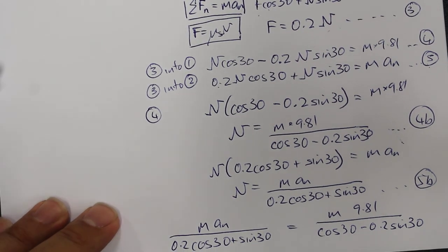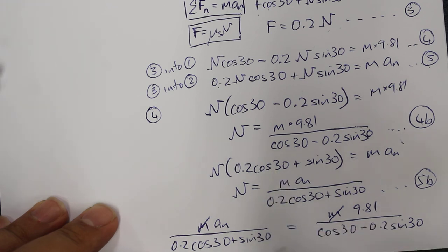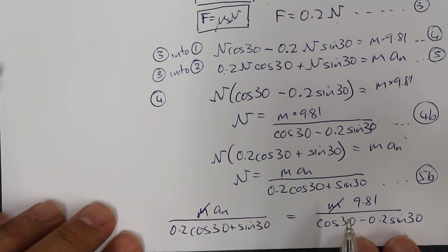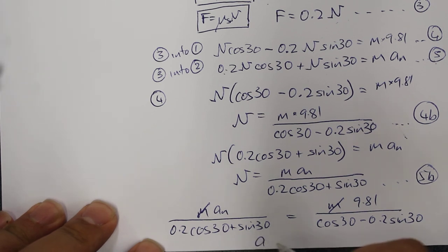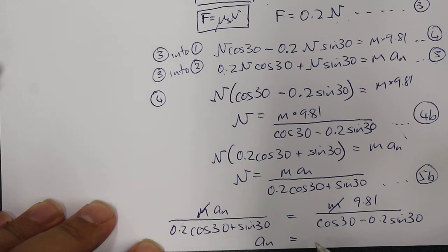The mass m cancels from both sides (assuming m ≠ 0). We can then rearrange this equation to solve for the normal acceleration aₙ, bringing the denominator term over to the other side to get an answer for aₙ for this system.